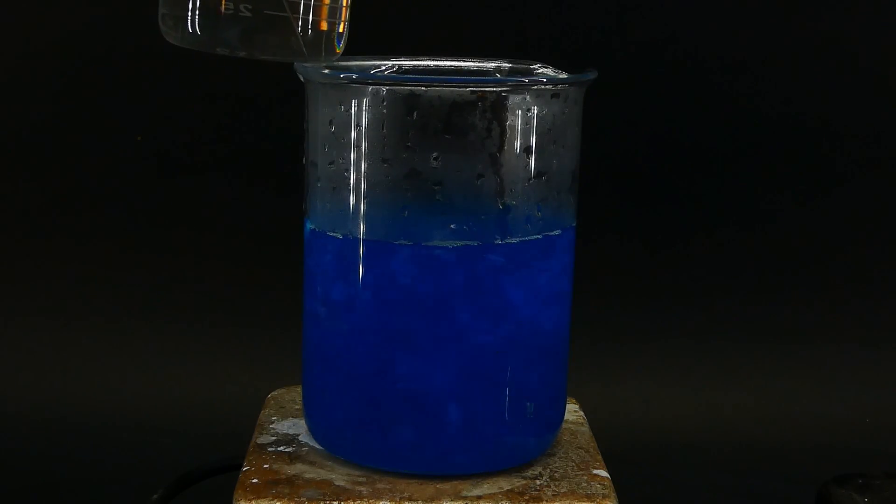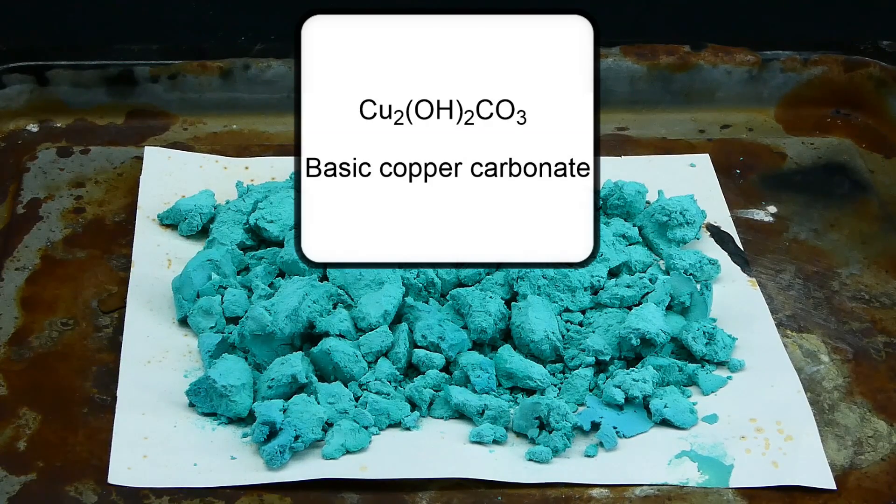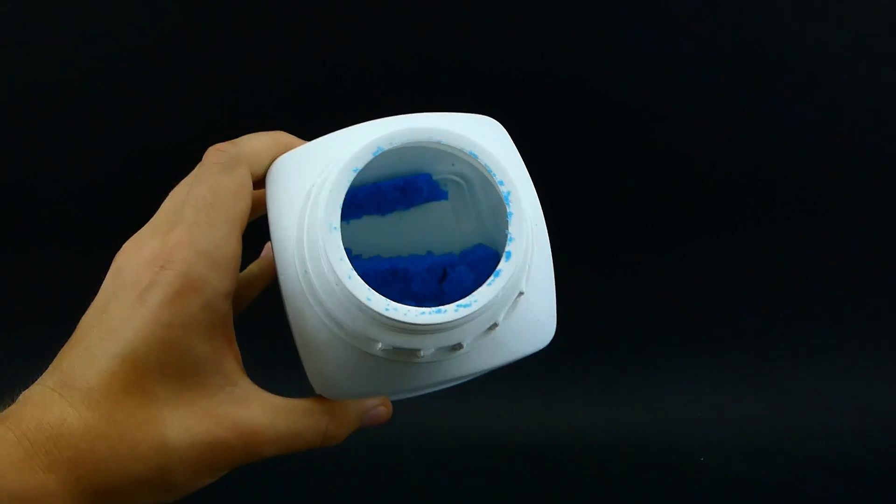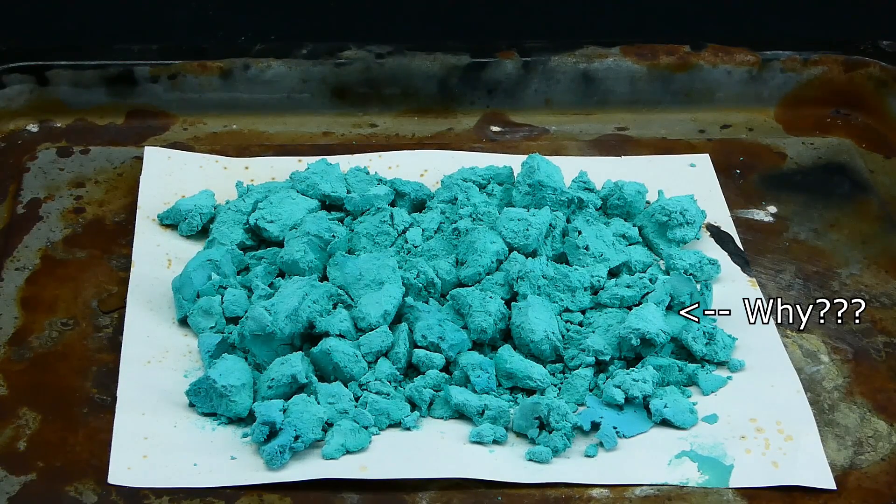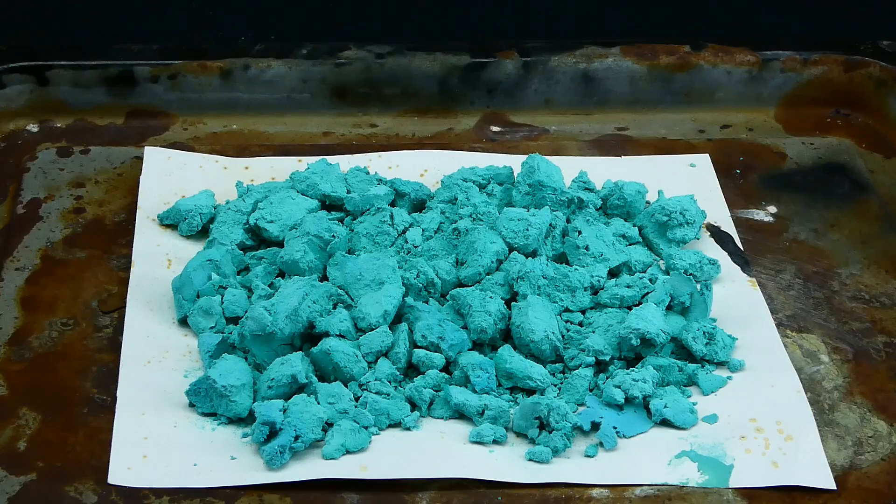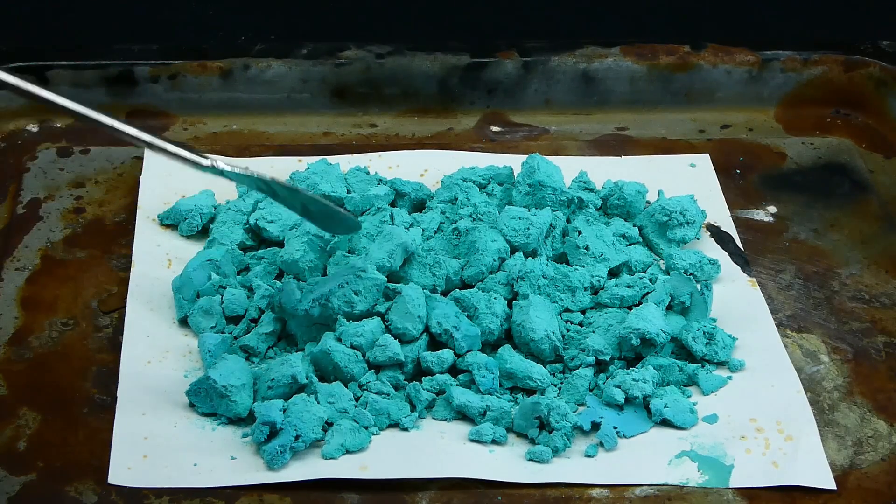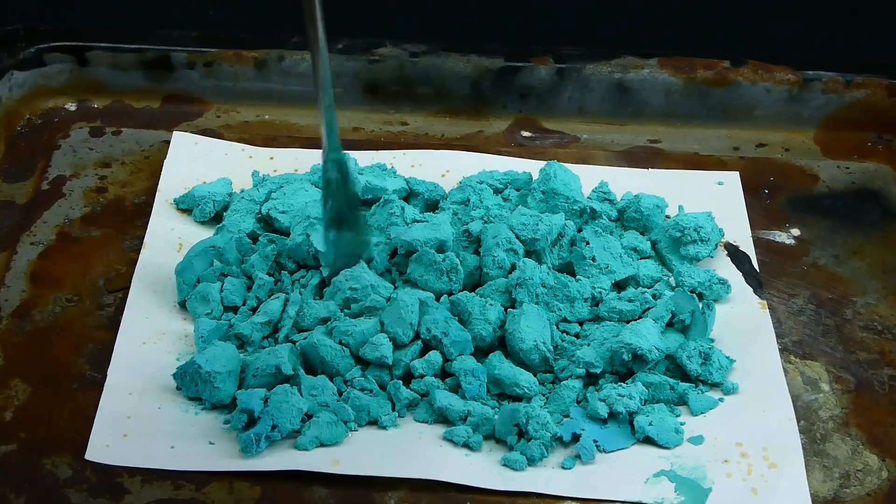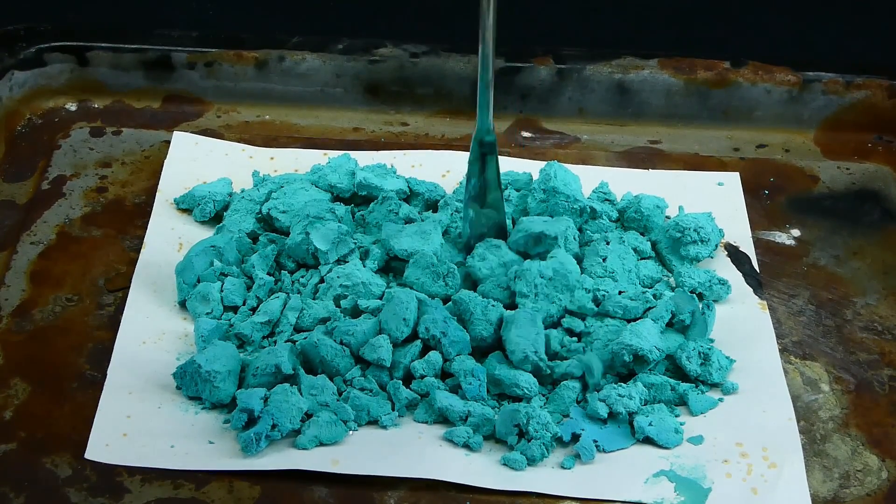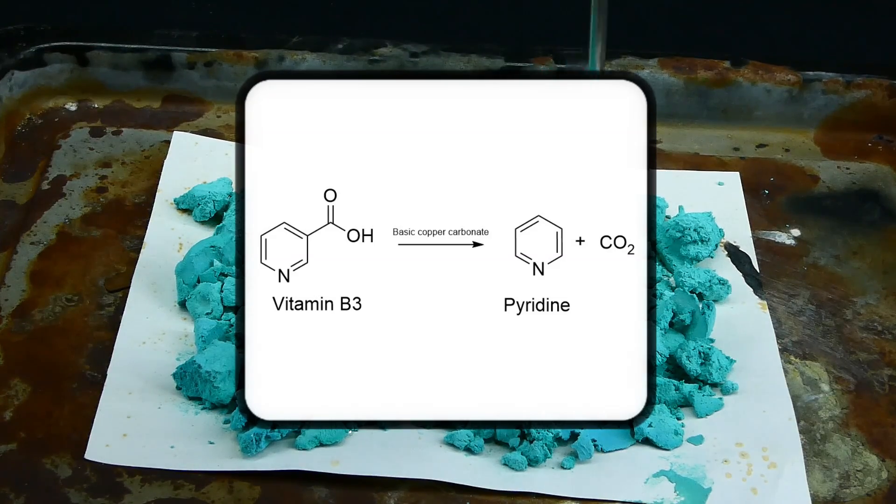In this short tutorial video, I am going to show you how to easily prepare basic copper carbonate from household baking soda and copper sulfate. But why would I even want basic copper carbonate in the first place? Well, it not only has a nice color, but it is also really useful in many chemical reactions mainly as a catalyst, and I will be using it to turn some vitamin B3 into pyridine in a future video.